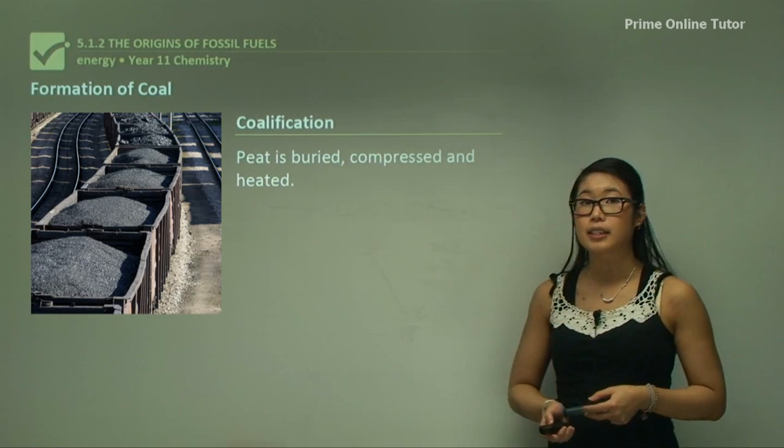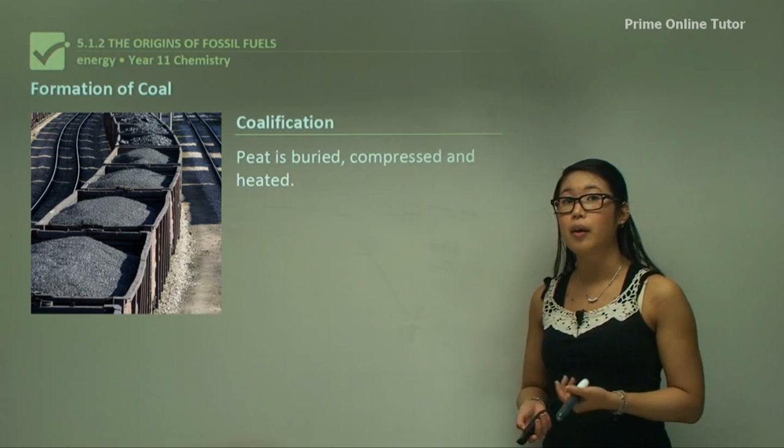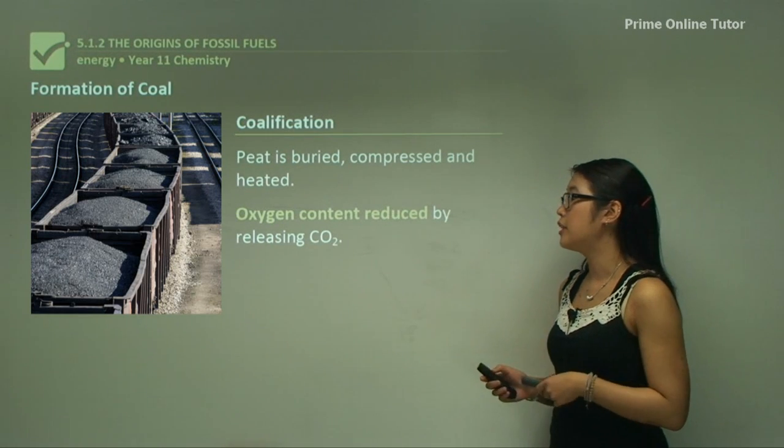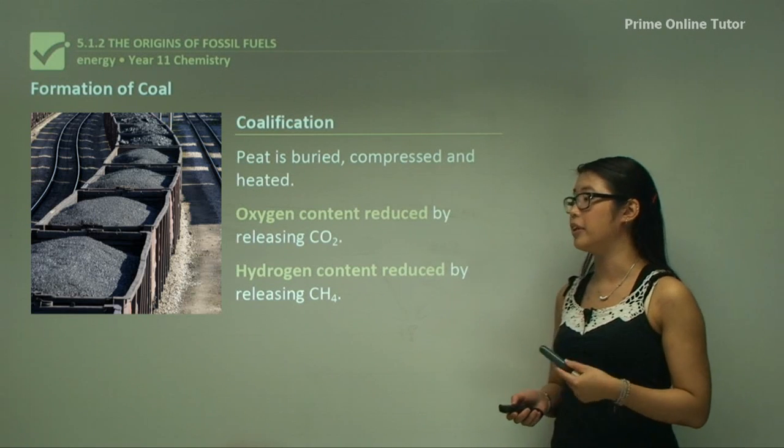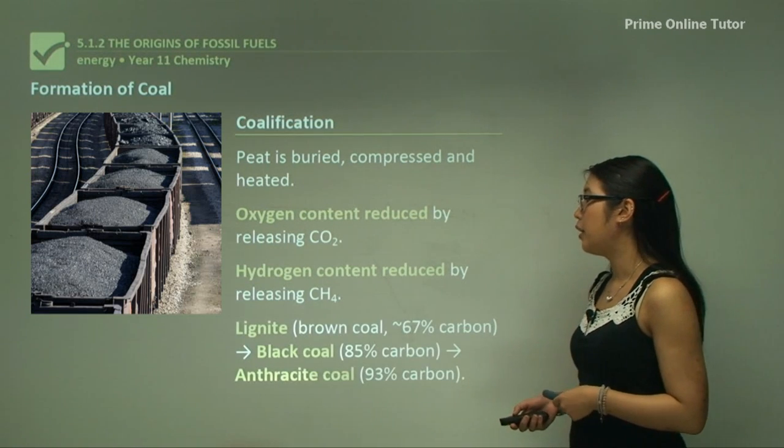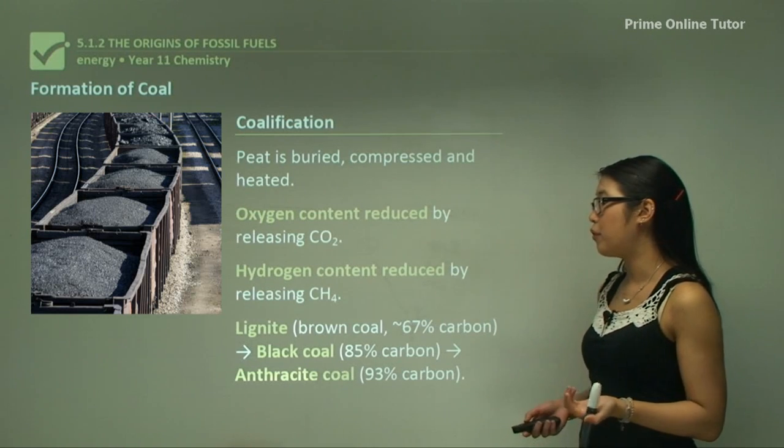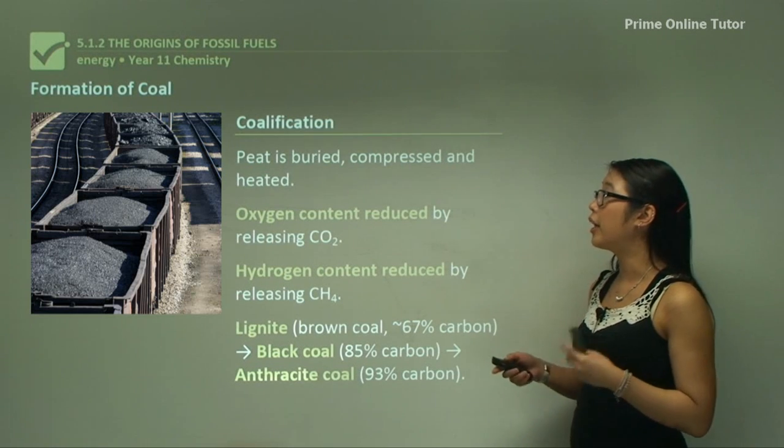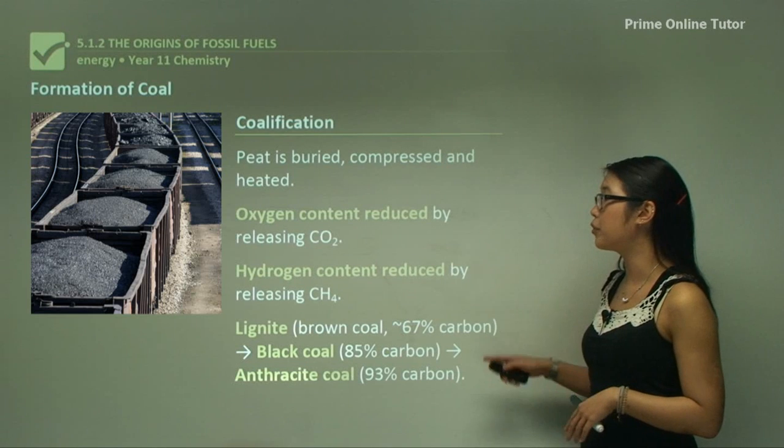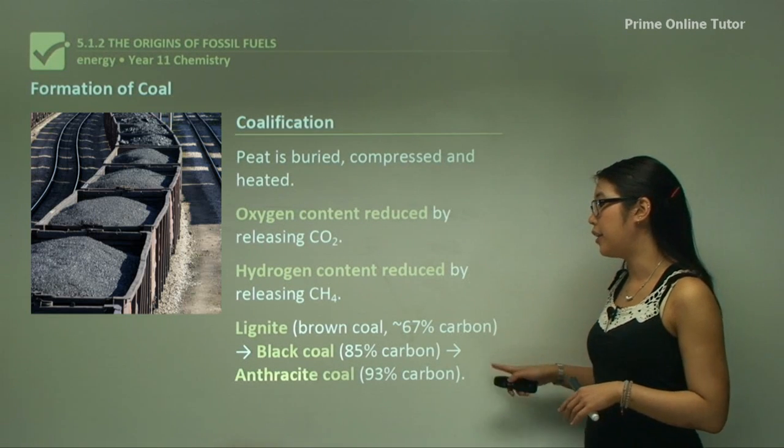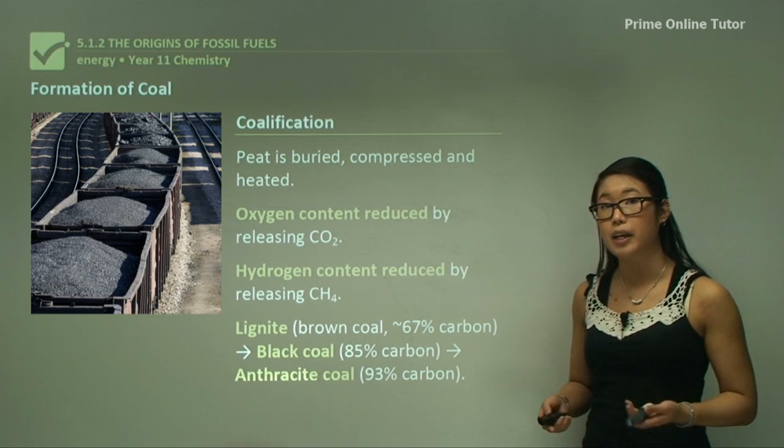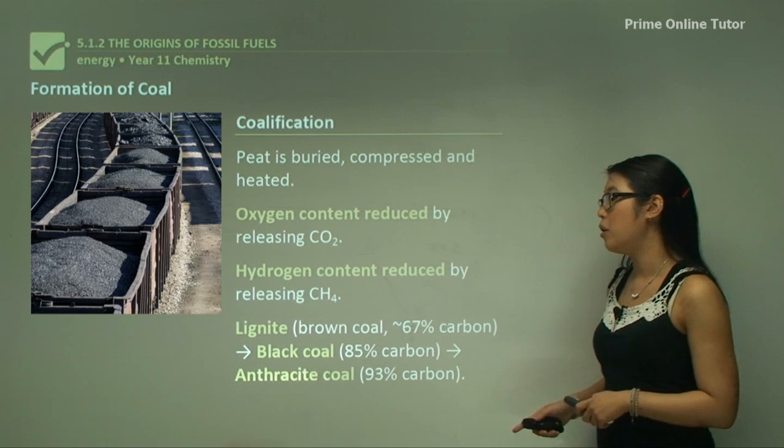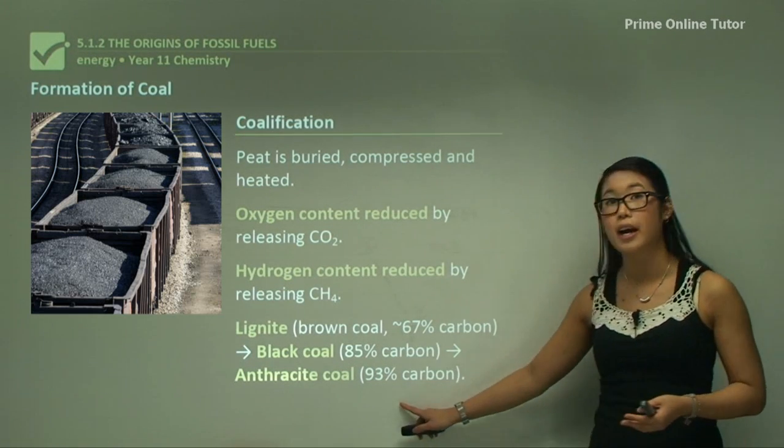Coalification is the next section. Peat is buried, compressed and heated as it moves underground. The oxygen content is reduced by releasing carbon dioxide. Hydrogen content is reduced by releasing methane CH4, which increases the carbon content to form lignite or brown coal, which is about 67 percent carbon. With continued compression and heating, we reduce more oxygen and hydrogen to form black coal at about 85 percent carbon. Finally, we reach about 93 percent carbon which is anthracite coal, the purest form of coal.